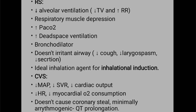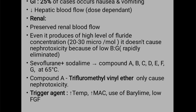Regarding CVS effects: MAP is reduced, systemic vascular resistance is reduced, and cardiac output is reduced. Heart rate and blood pressure changes are noted. It has arrhythmogenic properties. Regarding hepatic effects, hepatic blood flow is slightly reduced. Regarding renal effects, renal blood flow is preserved.